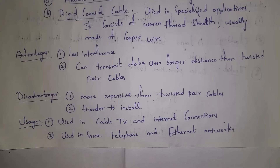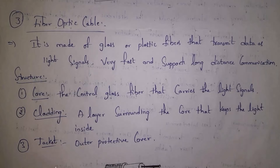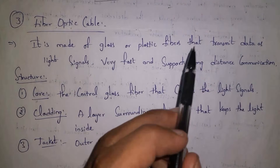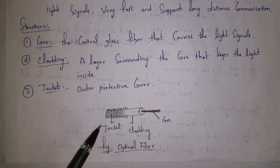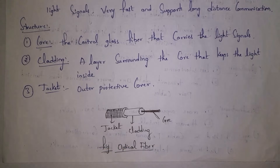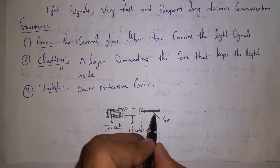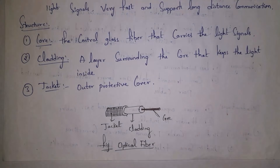The third guided transmission media is fiber optic cable. Fiber optic cable is made up of glass or plastic fiber that transmits data as light signals — making it very fast and capable of supporting long distance communication. Its structure contains three main components: core, cladding, and jacket. The core is the glass fiber through which data travels as light signals, cladding surrounds the core to keep light signals from escaping, and the jacket is the outer protective plastic cover.